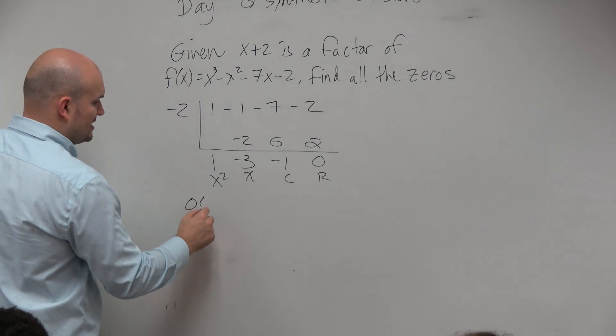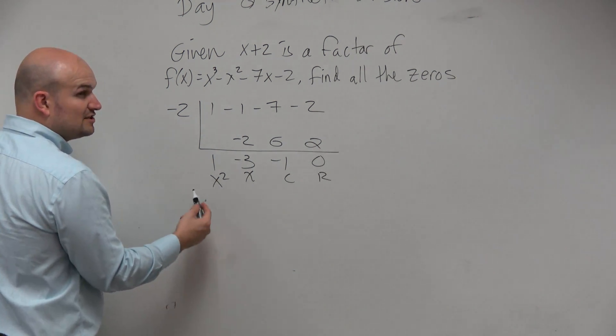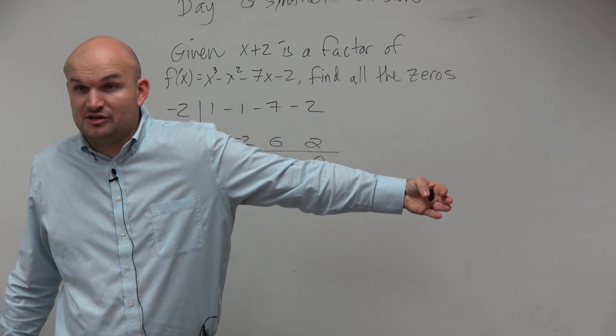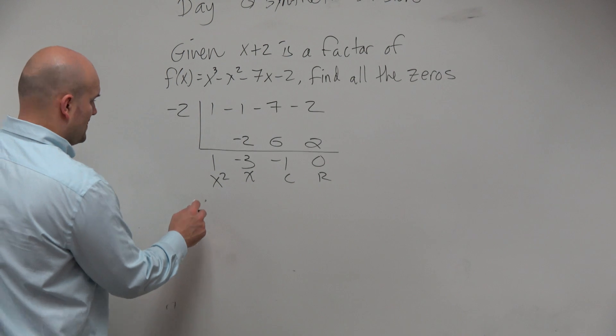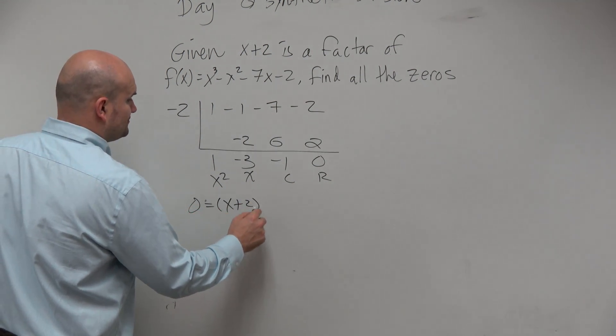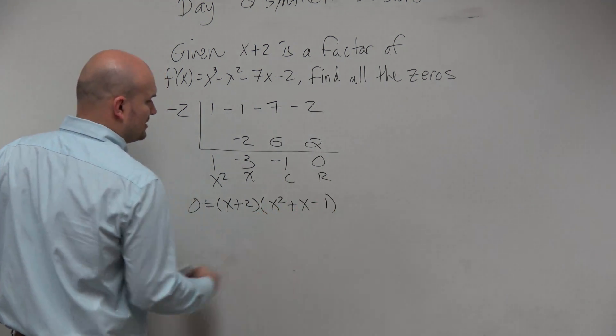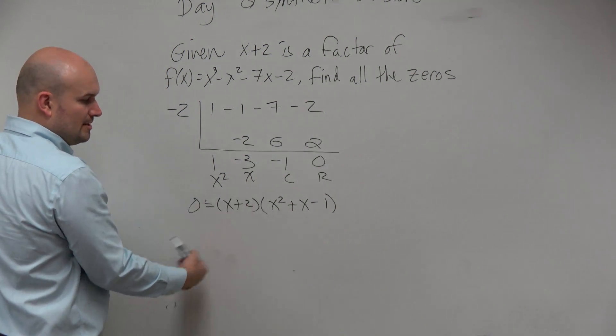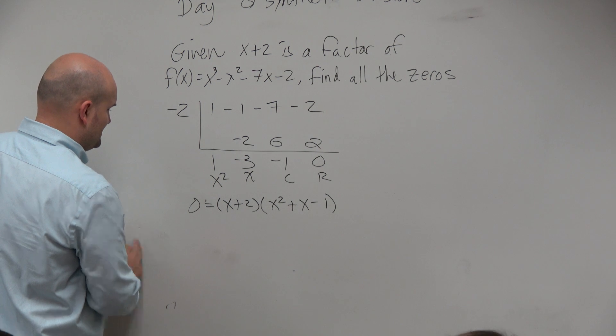So we could say, basically this is a factor and we want to find all the zeros, then we want to write a product of the factors equal to 0, right? To find all the factors, like to set them all equal to 0. So we could say 0 equals x plus 2 times x squared plus x minus 1 to find all the zeros. Because now we can just apply zero product property. Well here, we already know the zero is negative 2. So that one's kind of easy.